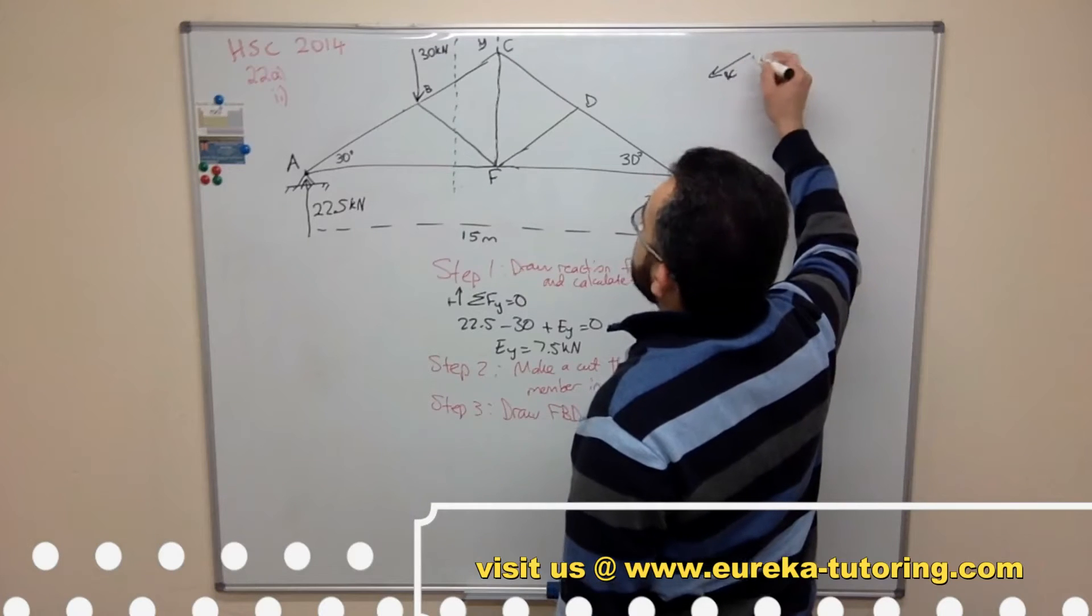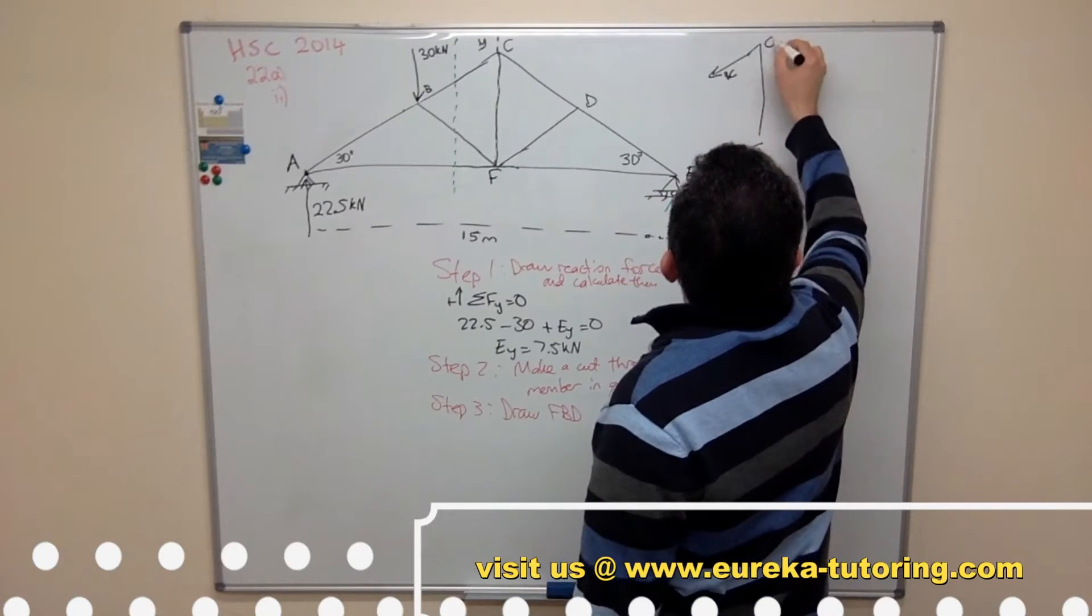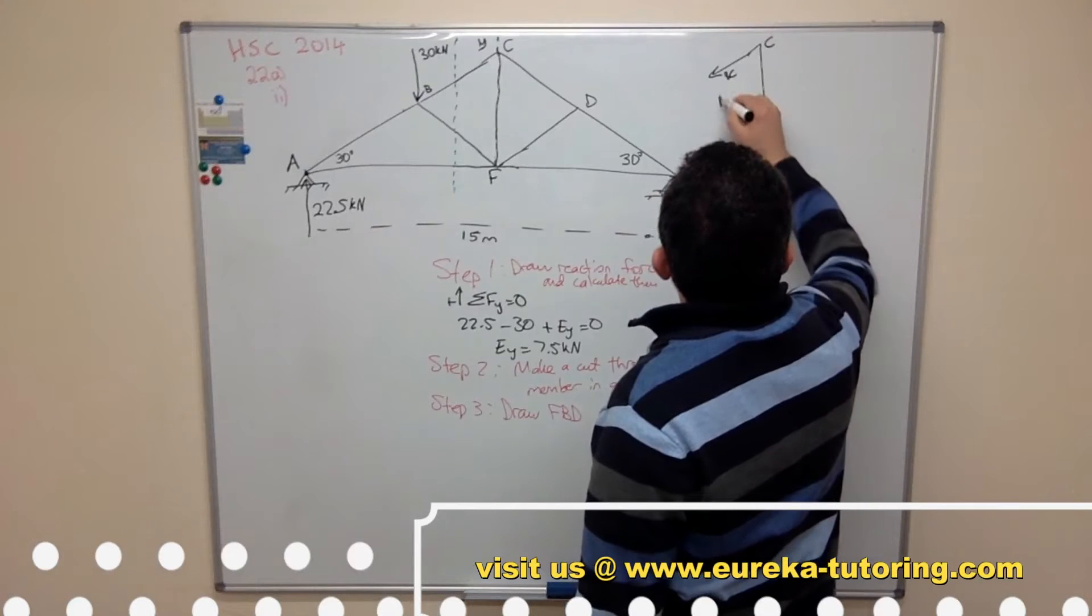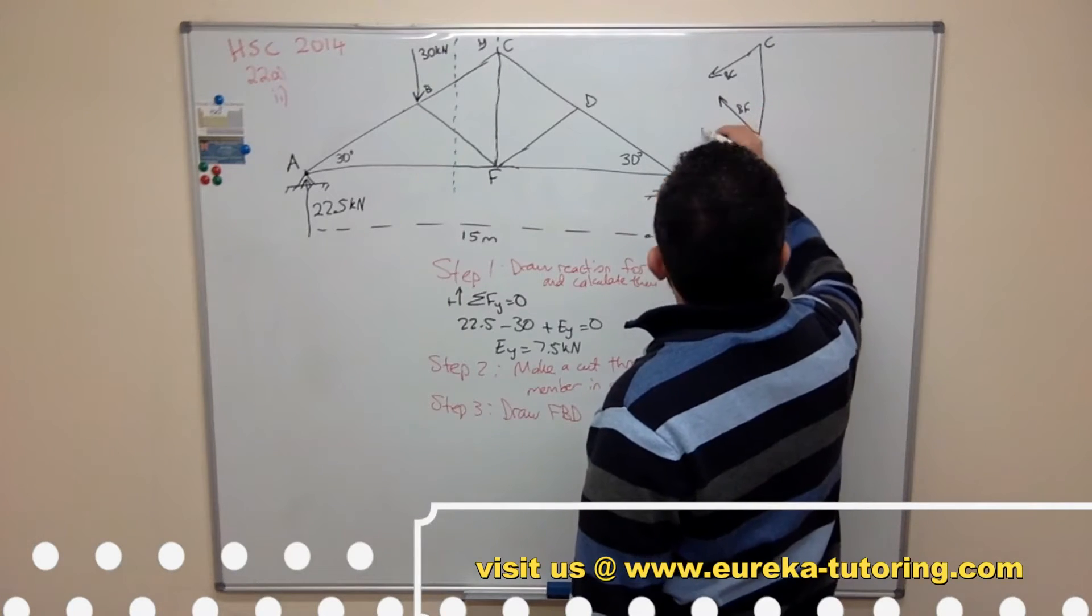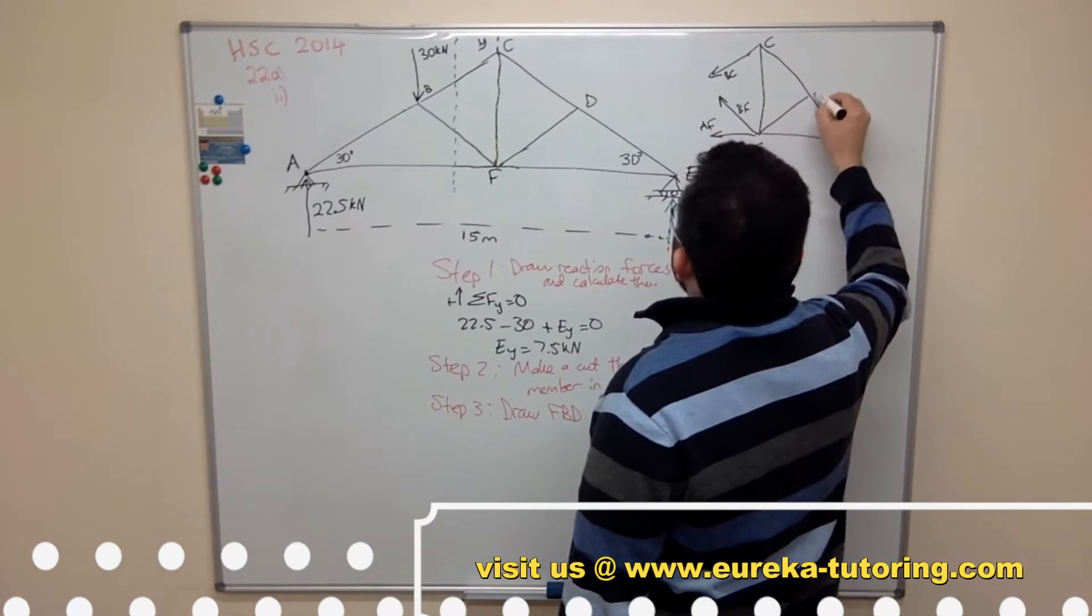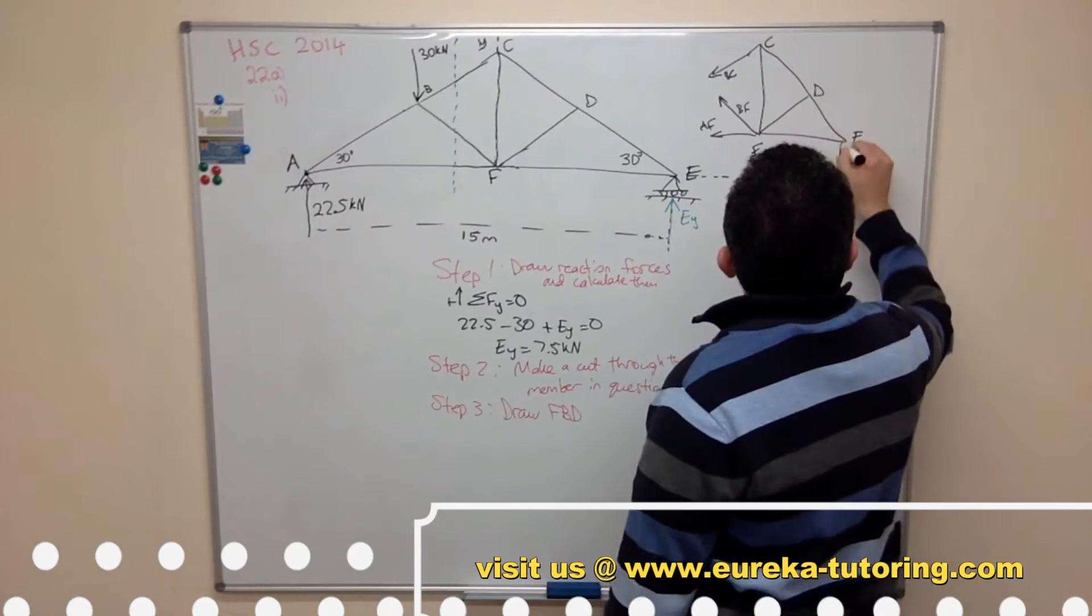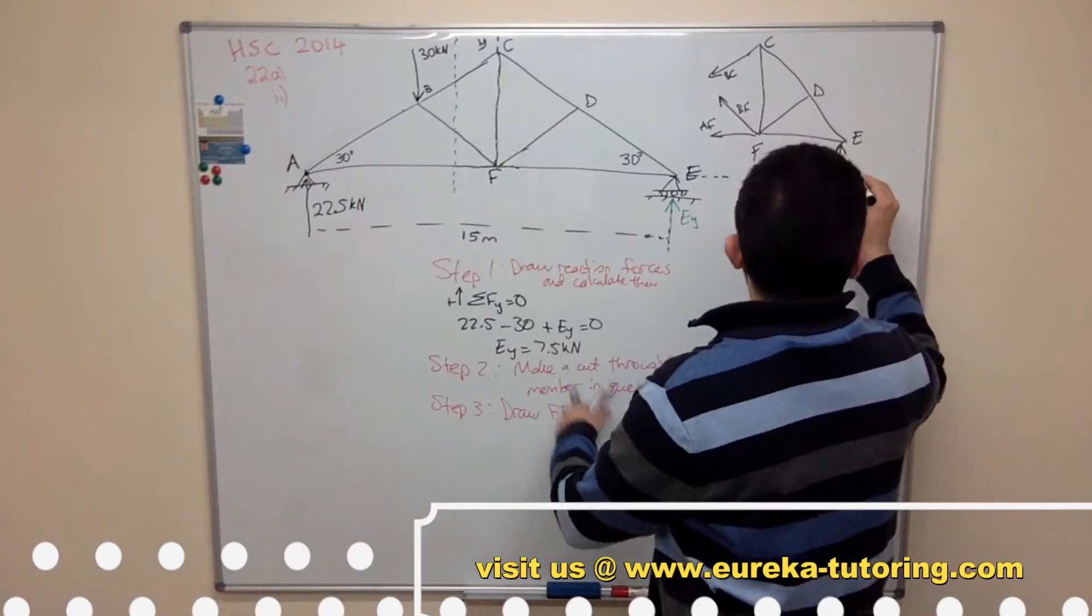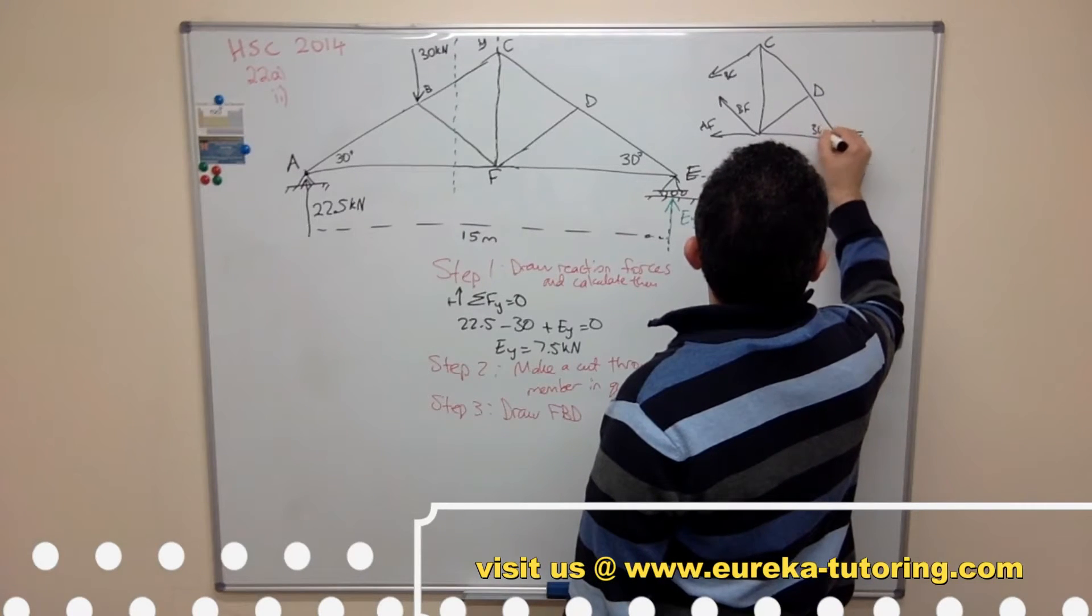So I'll draw my free body diagram. So I've got BC which is what we are after, DC, now we have member CF, DF, AF. And just complete the truss. There's D. Don't forget to put your reaction force. So that's 7.5, and this was 30 degrees.